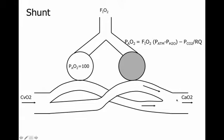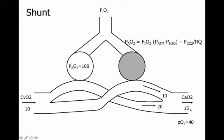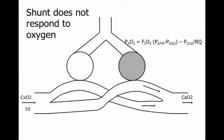But shunt is different. In a shunt example, one alveolar unit is flooded—with blood, pus, or water. It doesn't really matter; it's flooded. So the flooded side has no oxygenation. Mixed venous content comes back at 10. The stuff passing by the normal alveolus comes out with a content of 20. The blood passing the flooded side gets no oxygenation and comes out still at 10. Arterial content averages to 15, PaO2 equals 40—just like VQ mismatch.